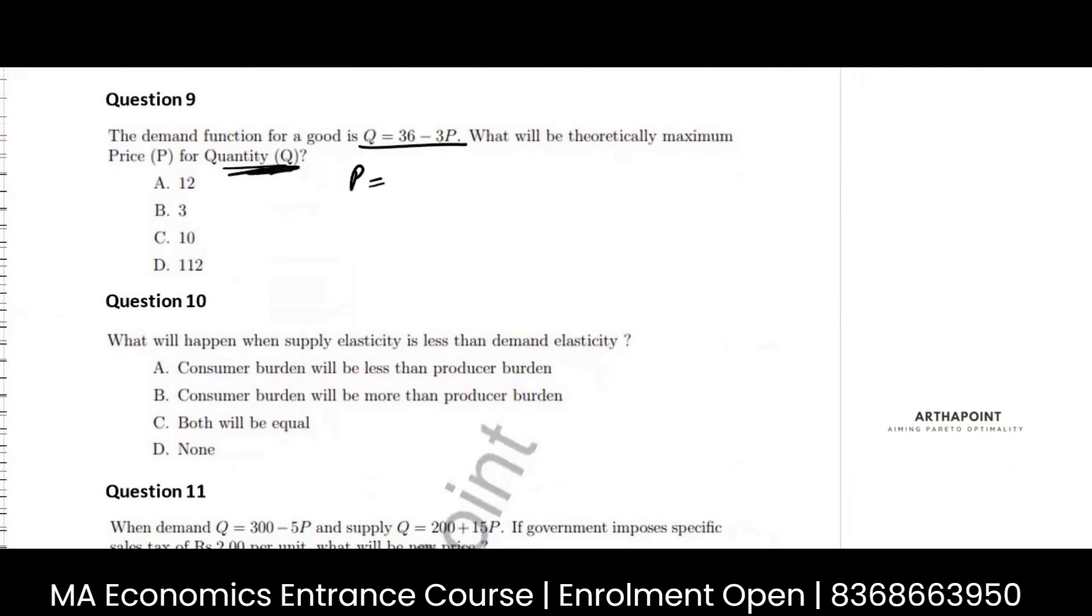So, when price is 0, right, then you have the maximum quantity. And when quantity is 0, you have the maximum price.